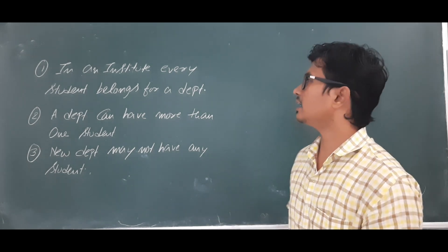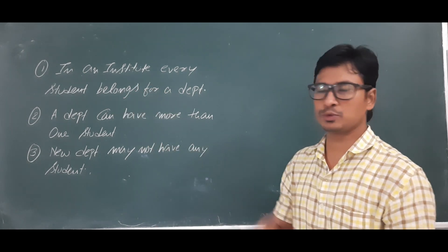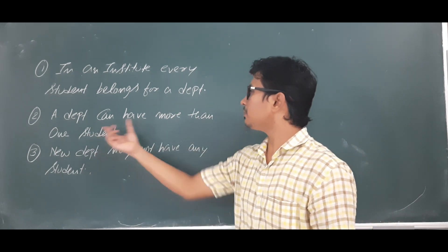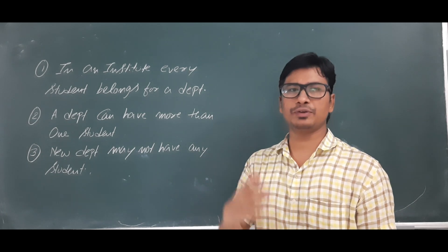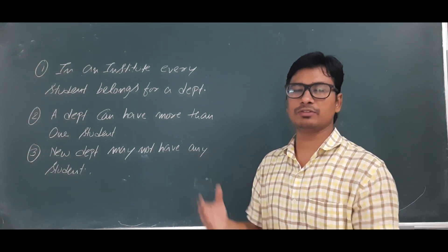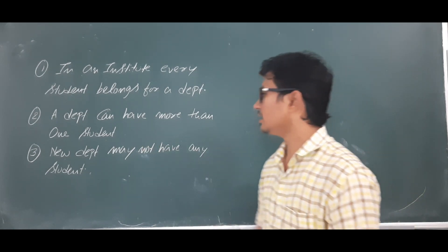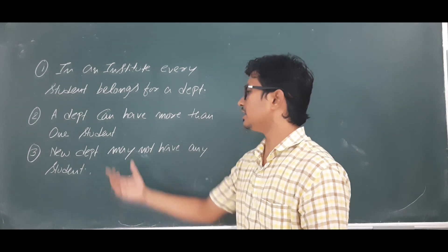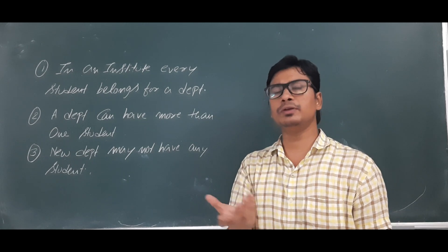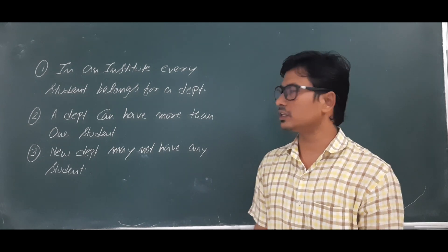In an institute, every student belongs to a department. A department can have more than one student — for example, the CS department may have 400 students, mechanical may have 100 students. A new department may not have any students, because if it is newly developed there may have been no admissions done yet.